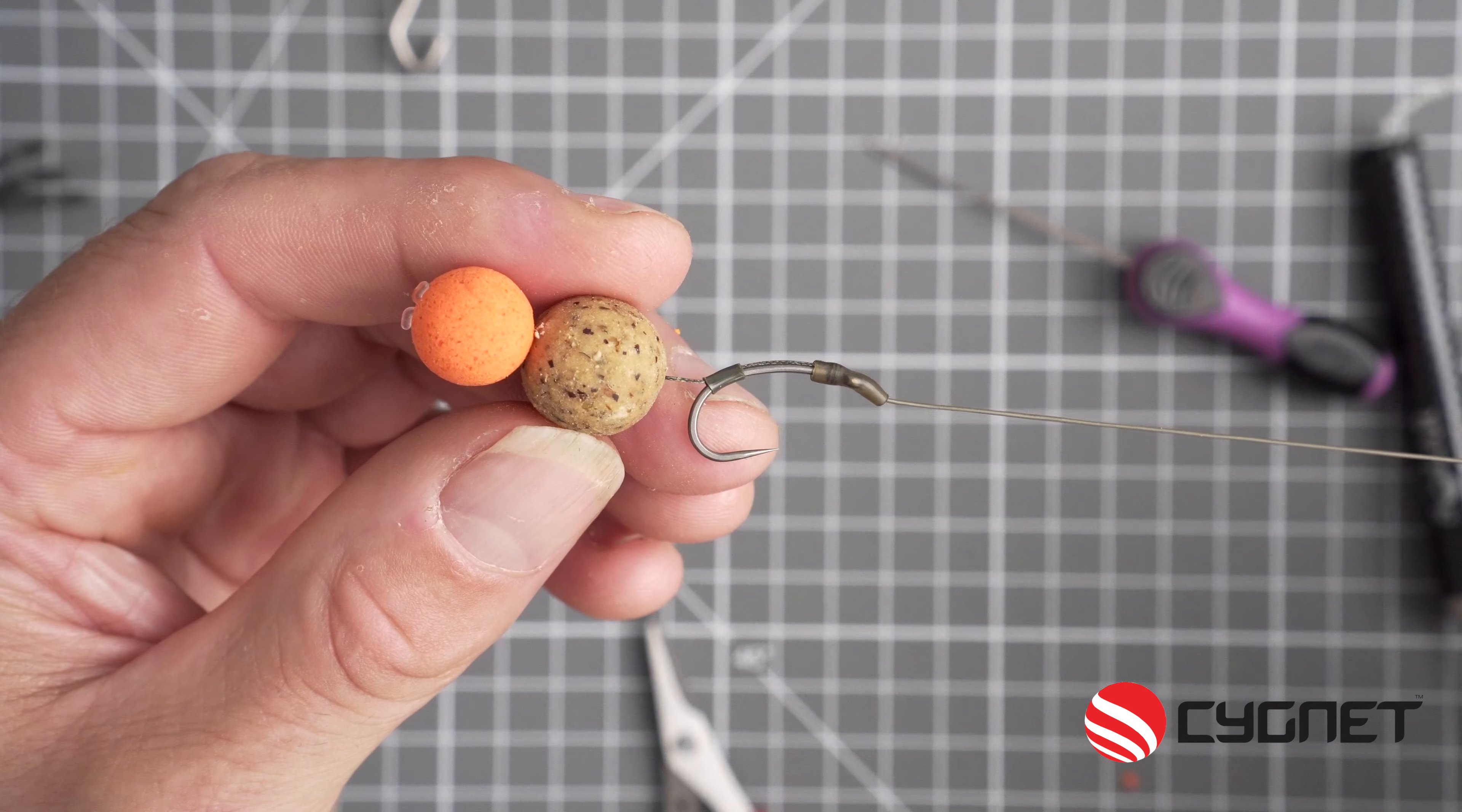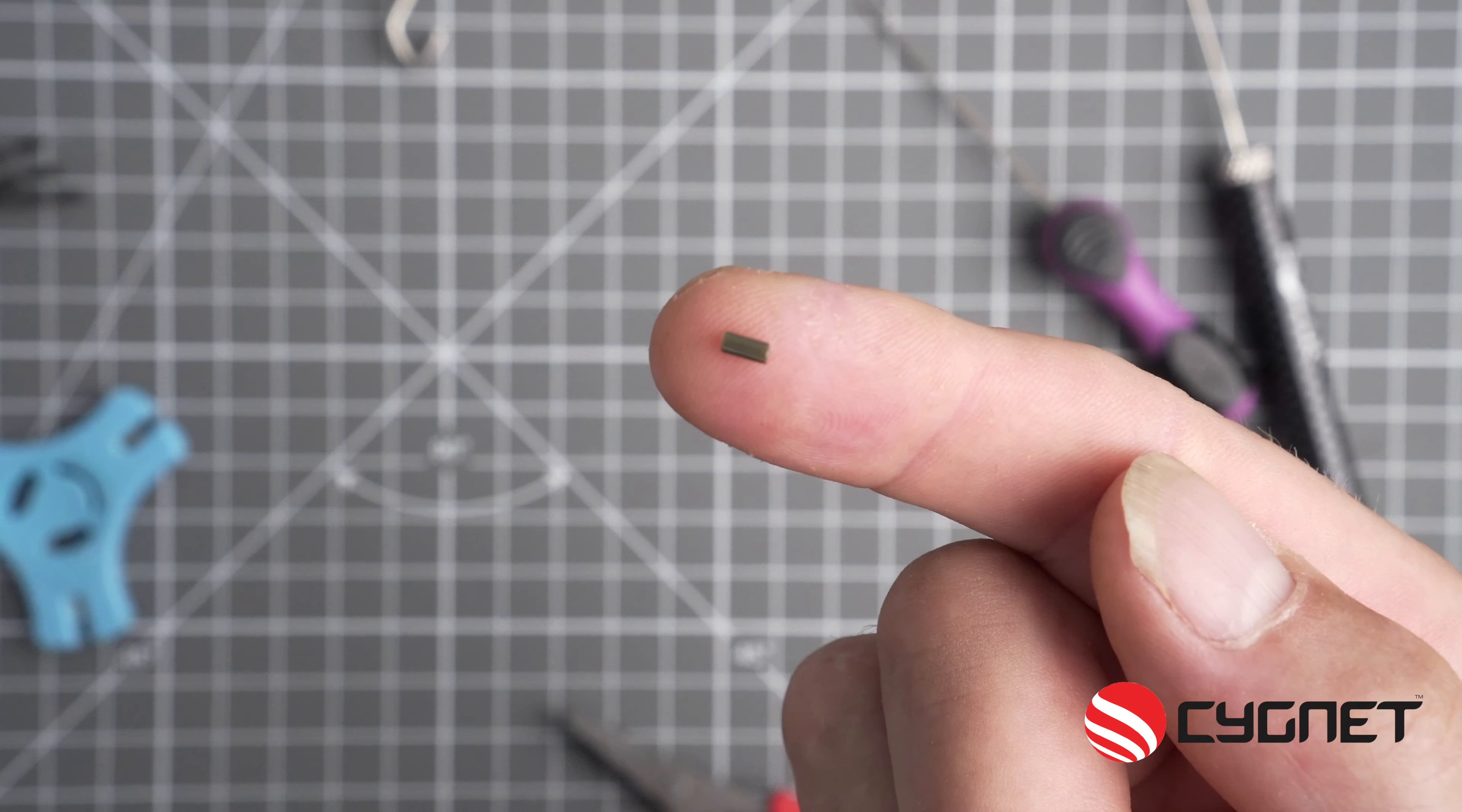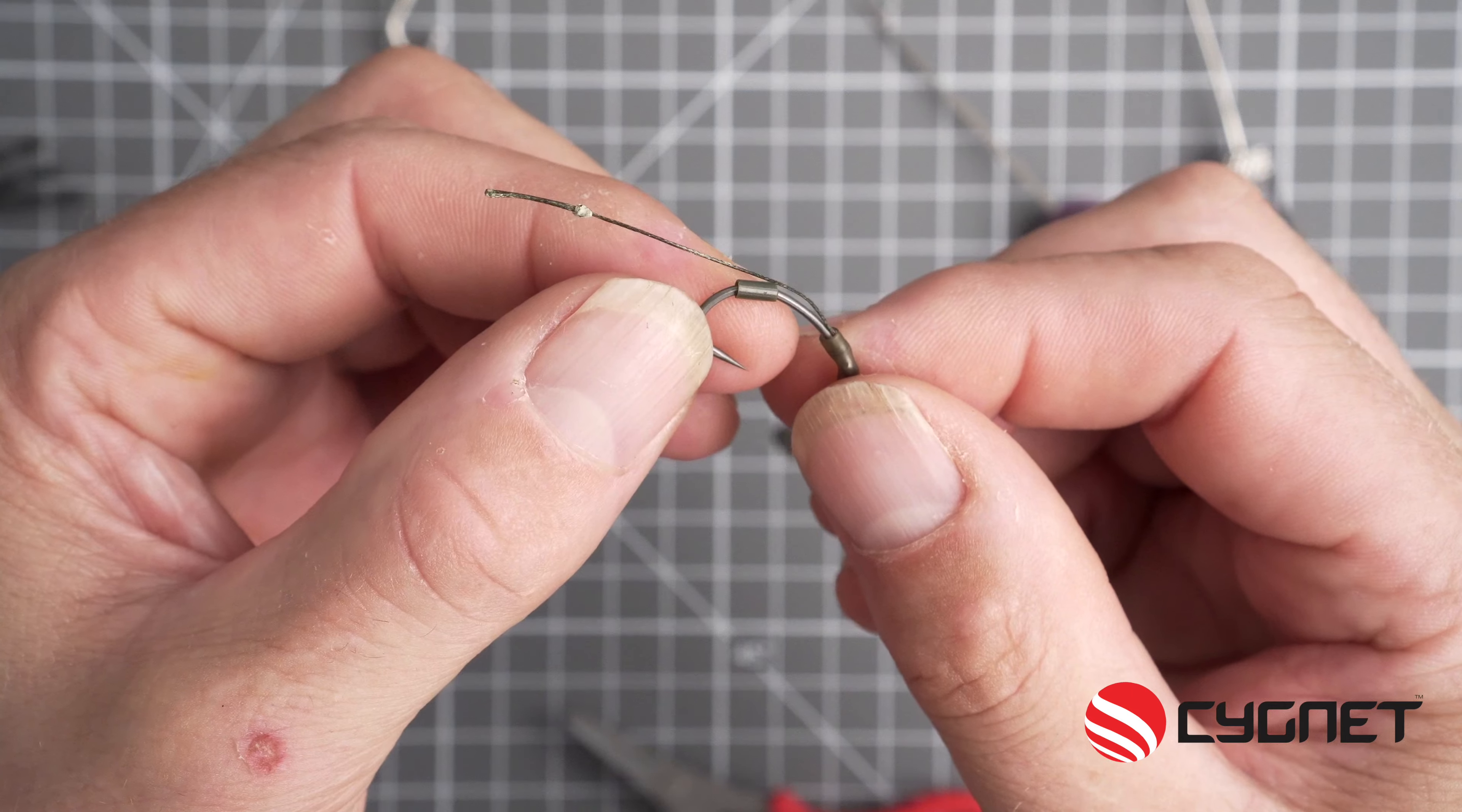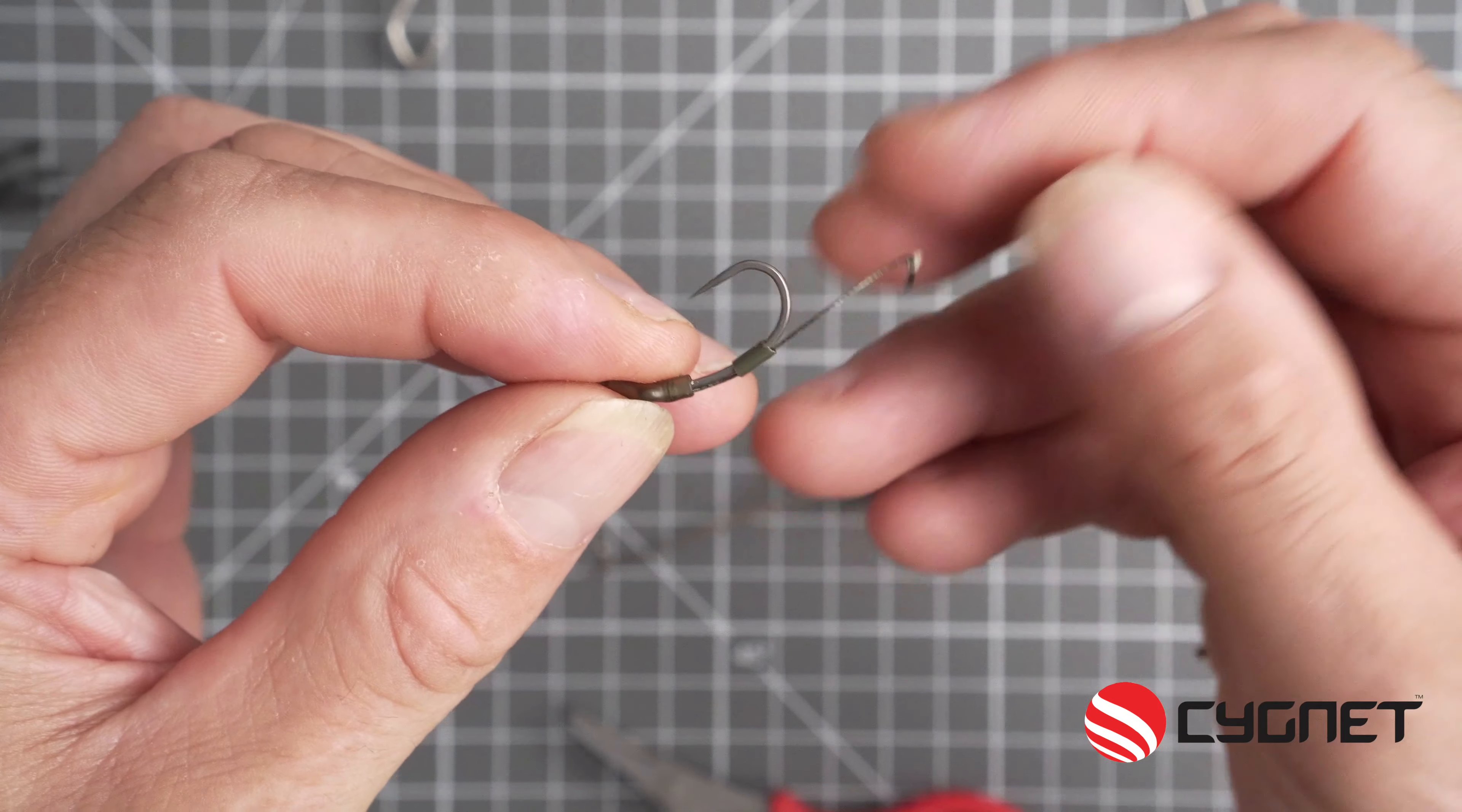So if you want to turn it into a snowman rig, just remove the loop from the hook and you need to add a small piece of shrink tube. I'm using the 1mm shrink tube from Cygnet. Cut a piece off to about 4mm in size, slide this onto the hook, then get a gated needle, slide the gated needle up underneath the shrink tube, hook up the hair and pull through. Now you need to set this in position and steam with a kettle.